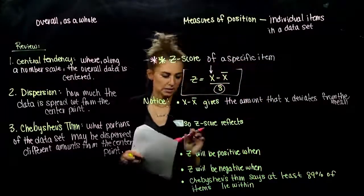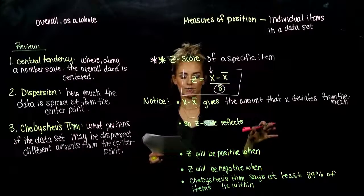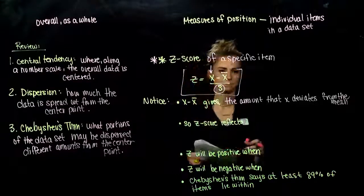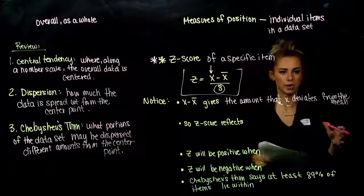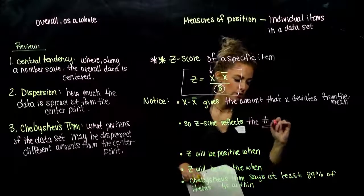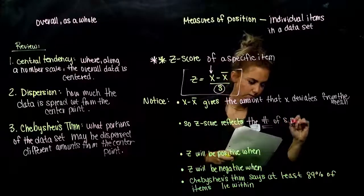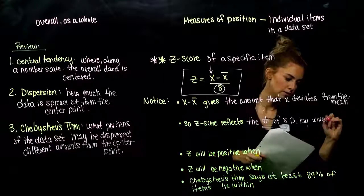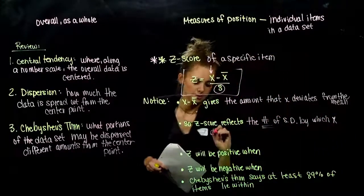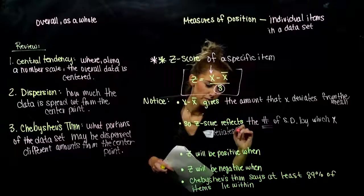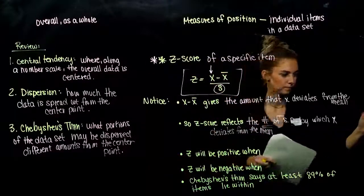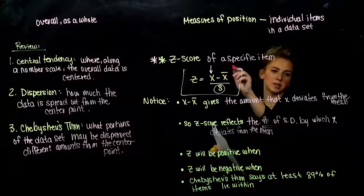So the Z-score reflects the number of standard deviations by which that data item deviates from the mean. It tells us specifically how many deviation units away we are based on the standard — the number of standard deviations by which the data value X deviates from the mean, since we're picking our measure of central tendency to be the mean.